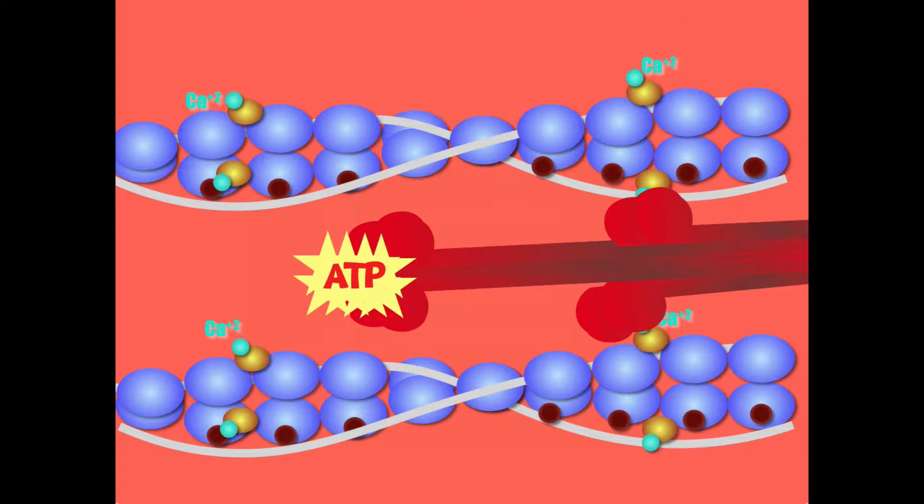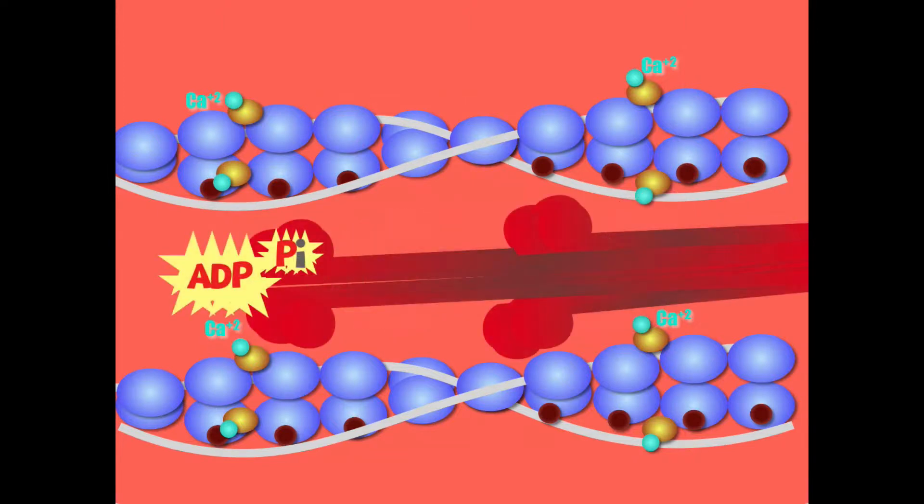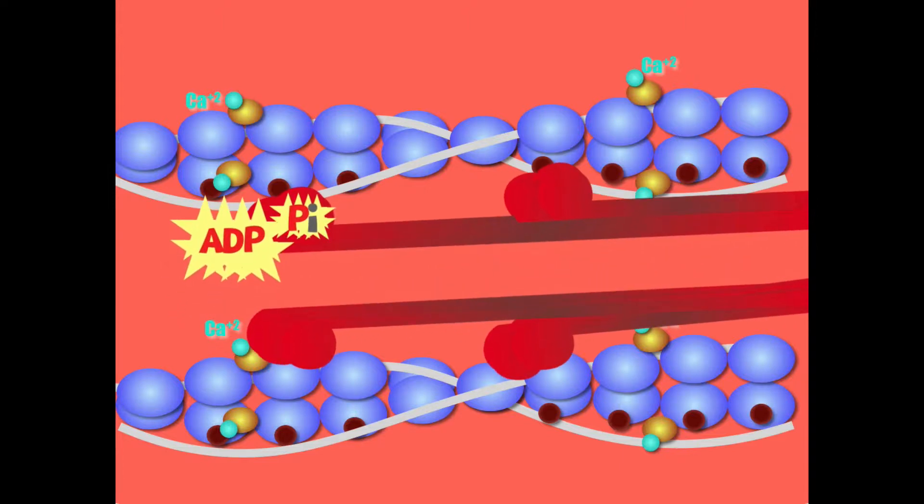This enzyme is going to essentially break up ATP, adenosine triphosphate, into ADP. At this point the myosin head is in what's called the cocked position, meaning it's getting ready to do some work.